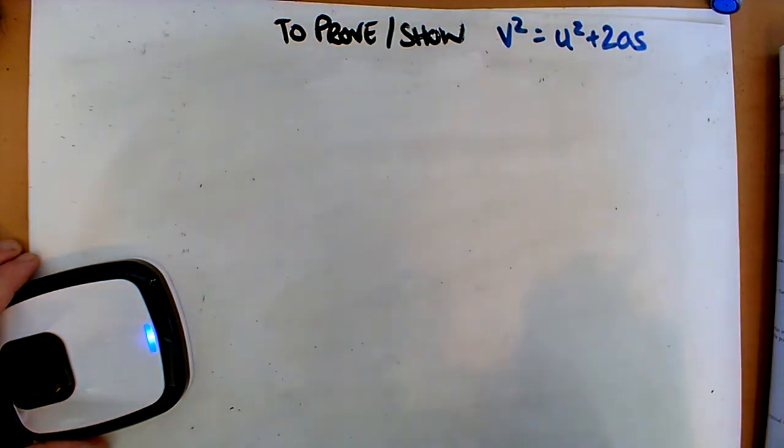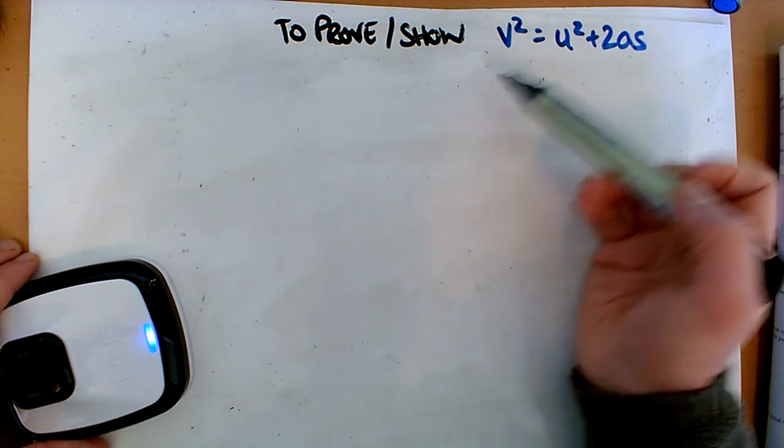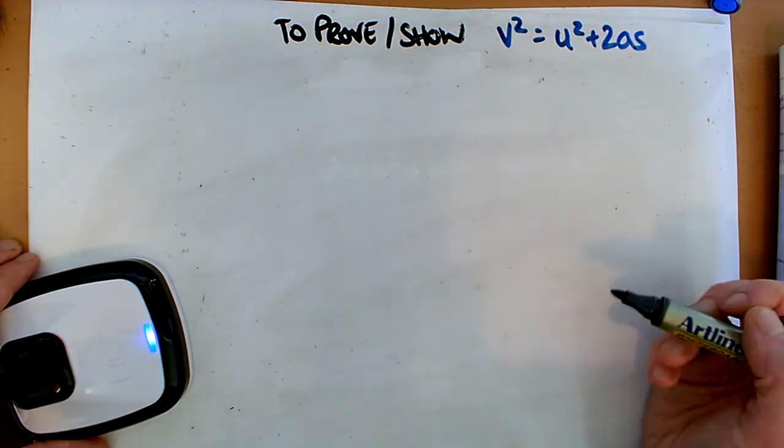Okay, so I'm going to do the final one of the UVAST equations, and this is to prove or show that v² = u² + 2as.